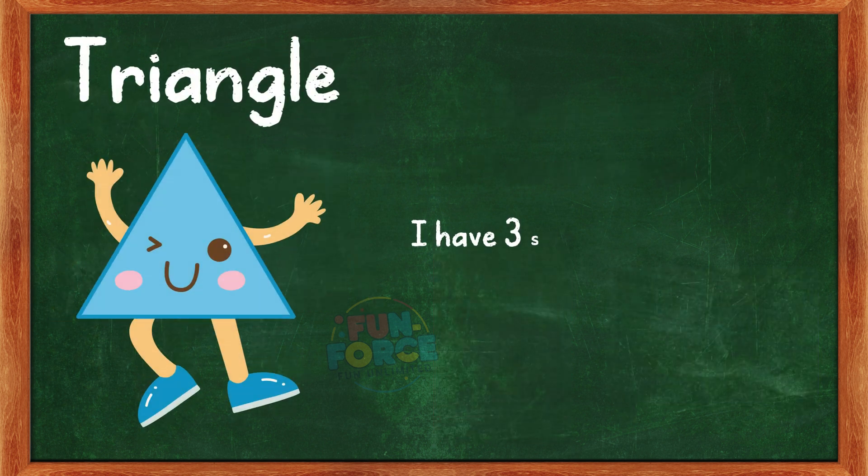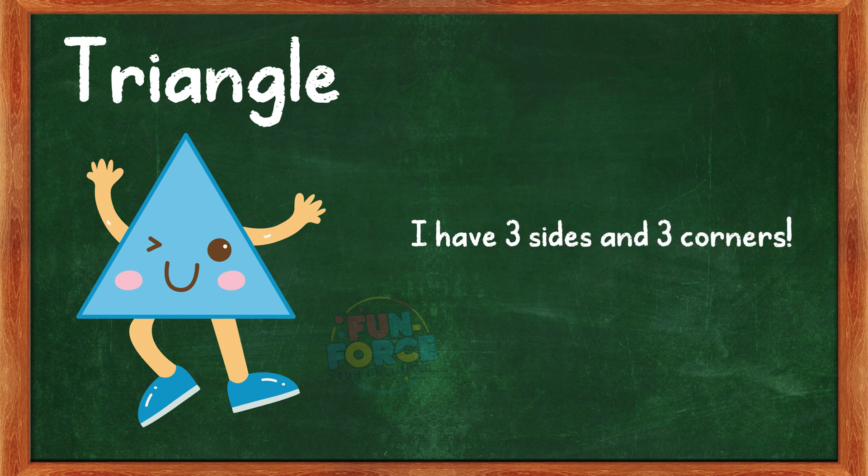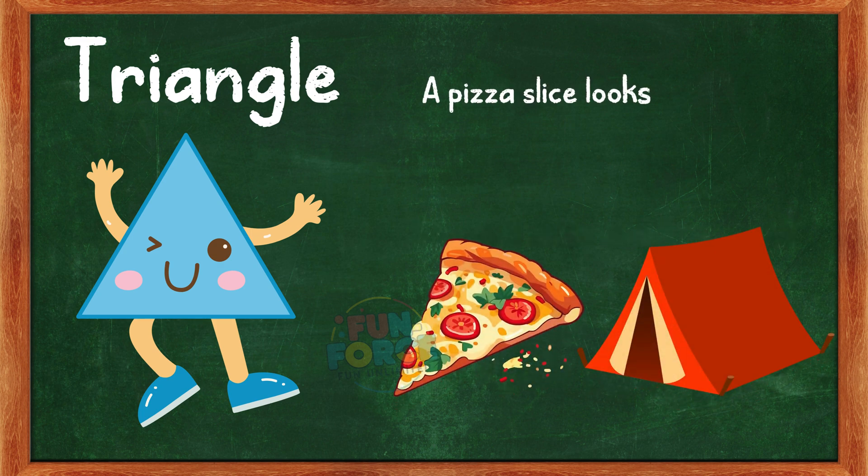I am a triangle. I have three sides and three corners. Can you guess some objects that are triangle shaped? A pizza slice looks like me. A tent has my shape.